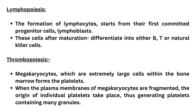Megakaryocytes, which are extremely large cells within the bone marrow, form the platelets in a process termed thrombopoiesis. When the plasma membrane of megakaryocytes is fragmented, individual platelets are generated, each containing many granules.